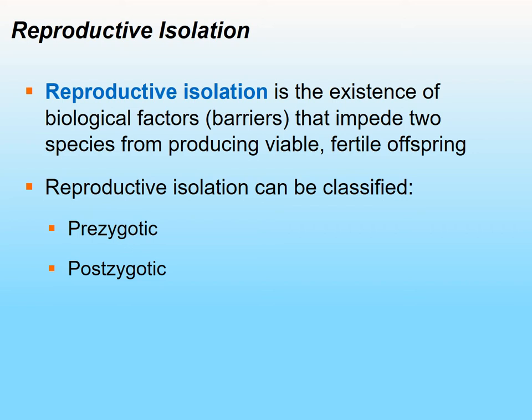Reproductive isolation can occur before fertilization or after fertilization. Before fertilization, it's called prezygotic isolation; after fertilization it's postzygotic isolation. There are different mechanisms of both prezygotic and postzygotic isolation, which we're going to go over.